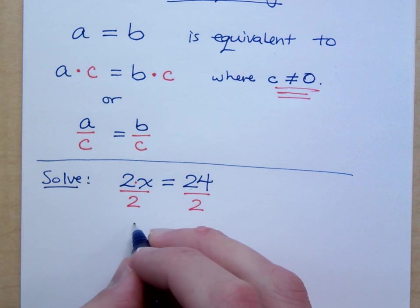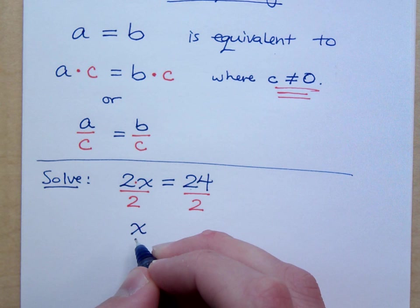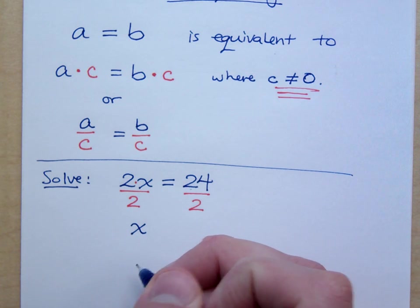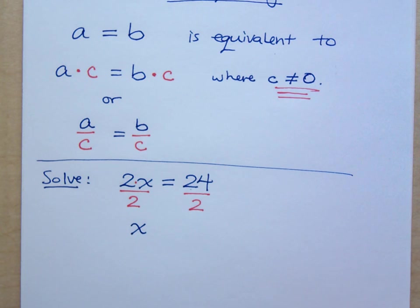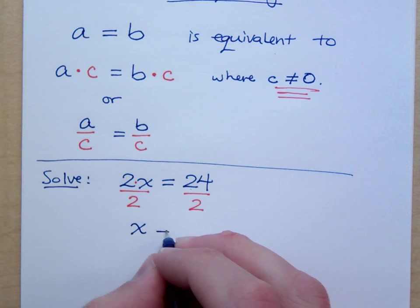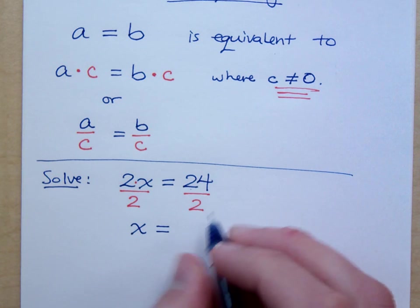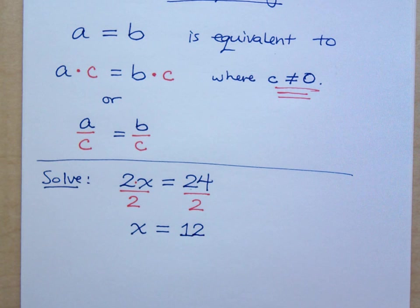It's 1. So, this gives me 1x, which is just x. Because when we're trying to solve these equations for the variables, we want the coefficient to be 1. So, x equals 12.